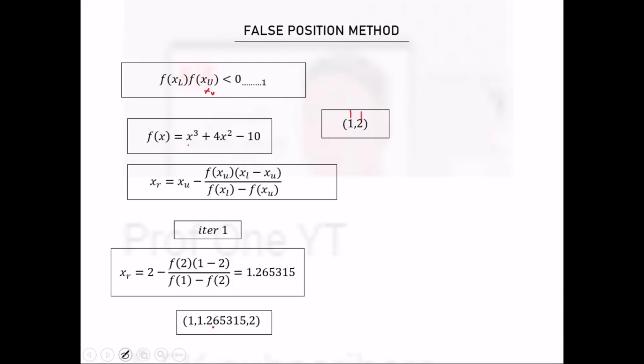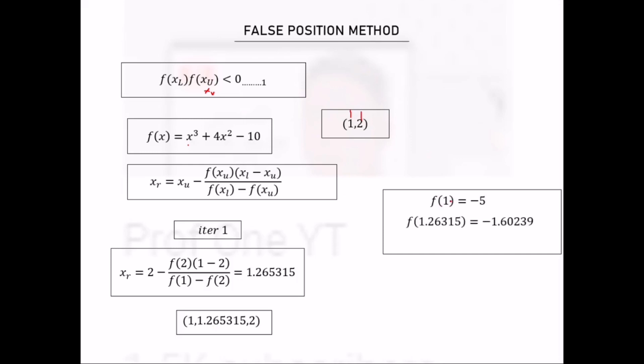We substitute each bound into the function. The function of 1 gives −5. Substituting xr = 1.26315 into the function gives approximately −1.0239. Substituting the upper bound of 2 gives 14.